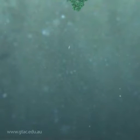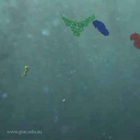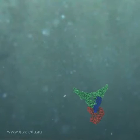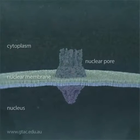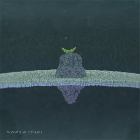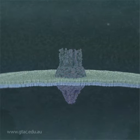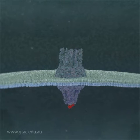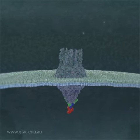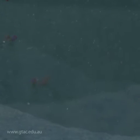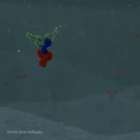The transcription factor diffuses through the cytoplasm, recruiting nuclear import proteins along the way. It enters the cell nucleus through a nuclear pore. The nuclear import proteins are dislodged.